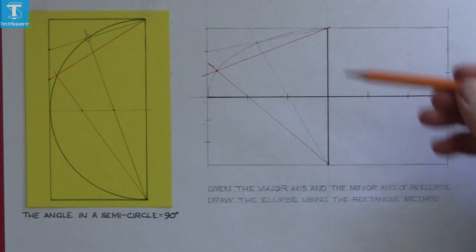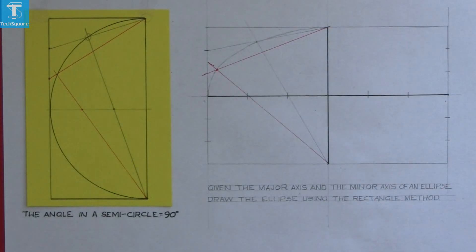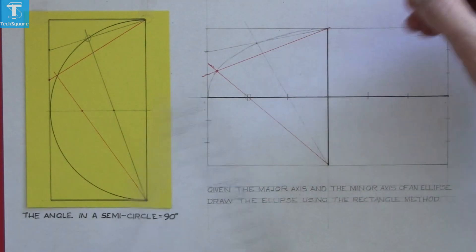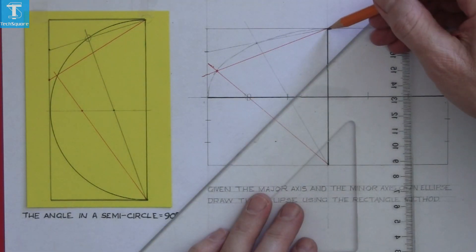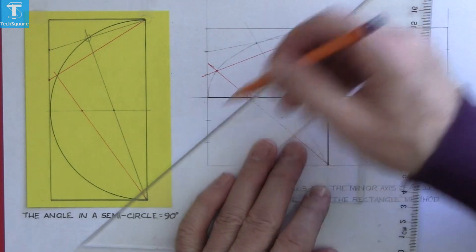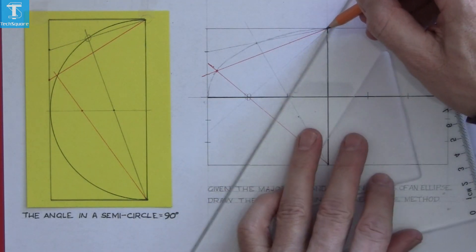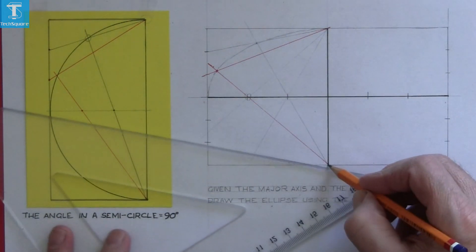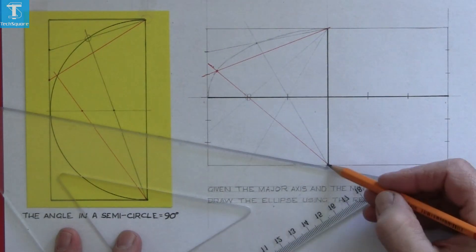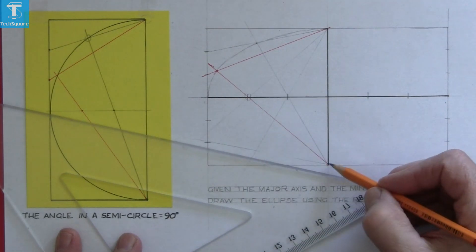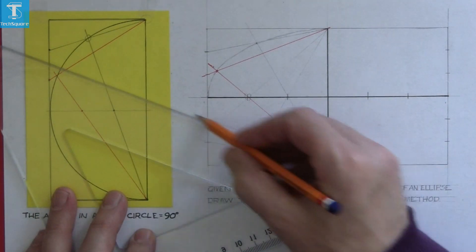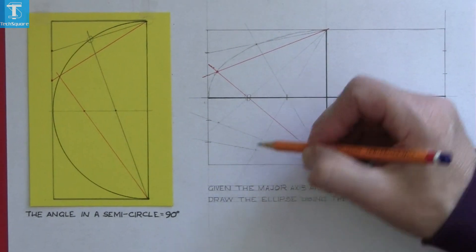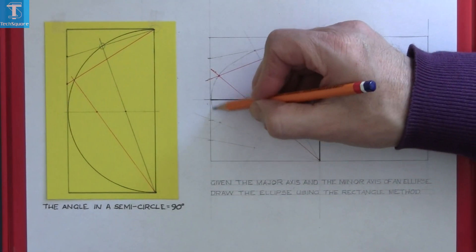To do the other quarter now we do the opposite way around. So from the top point we draw through these middle points. And the same point number one. And now from the bottom point draw through the end ones here. That gets us the points on the curve. Freehand curve through those.